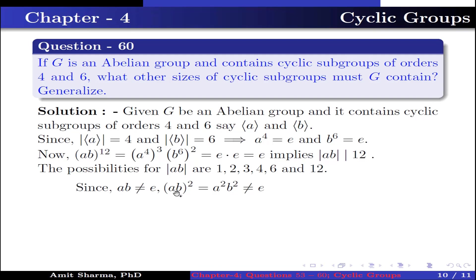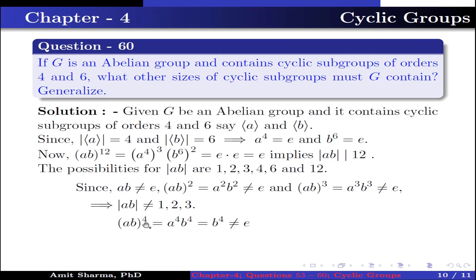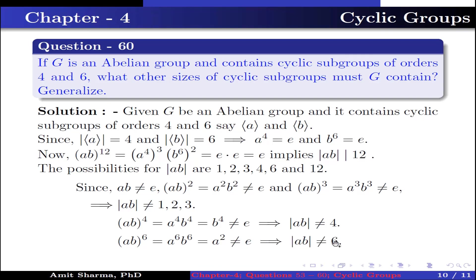Since AB ≠ identity, (AB)² = A²B² ≠ identity, and (AB)³ = A³B³ ≠ identity, the order of AB cannot be 1, 2, or 3. (AB)⁴ = A⁴·B⁴ = B⁴ ≠ identity, so the order of AB cannot be 4. (AB)⁶ = A⁶·B⁶ = A²·identity = A² ≠ identity, so the order of AB cannot be 6.